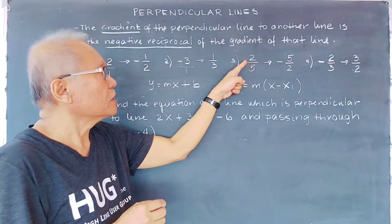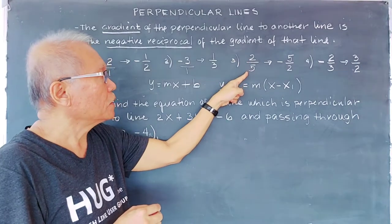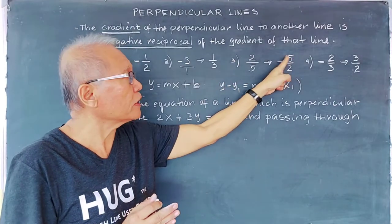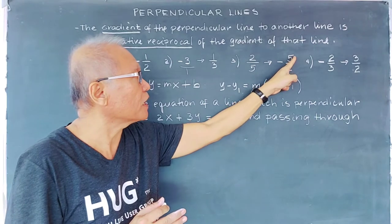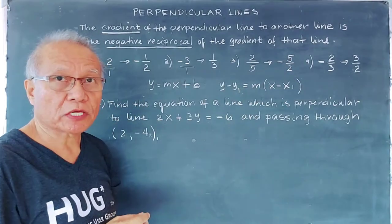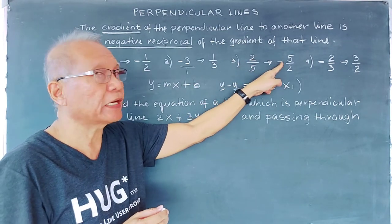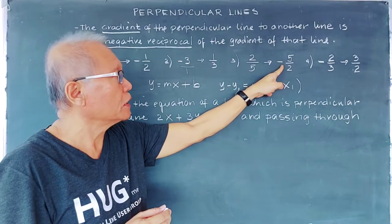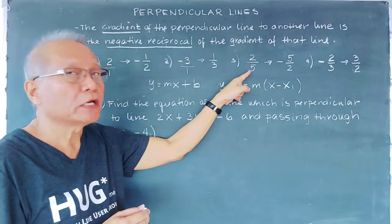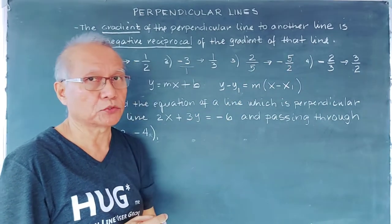Next, we have positive 2 over 5. So 5 will go up and 2 will go down, giving 5 over 2. But don't forget to change the sign — this positive will become negative. So the negative reciprocal of 2 over 5 is negative 5 over 2.